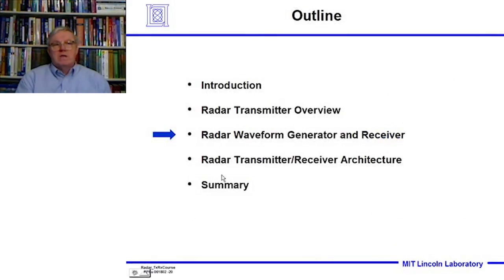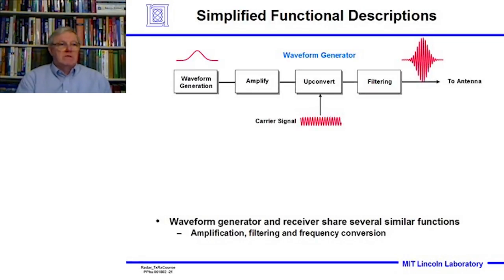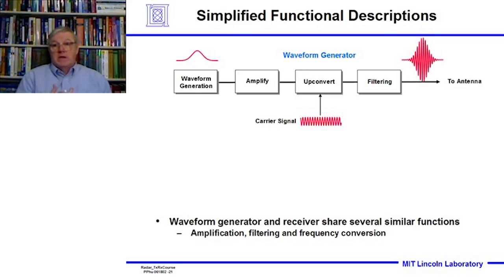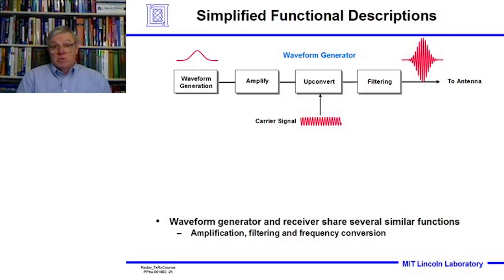Now let's look at the waveform generator and receiver. We're going to generate a waveform — we've talked about different waveforms where we turn on and have a sine wave that's on for a while and then turned off, and the length of that is our pulse width. We call that a pulsed CW signal, and the frequency of the wave inside that pulse is our carrier, the frequency of the radar.